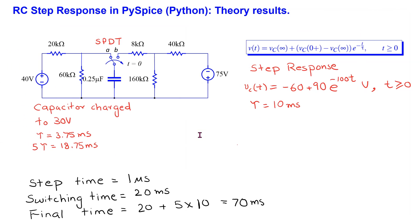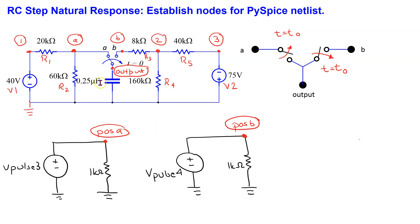Let us now move to the step response example. This solution is taken from another video in this channel. For this circuit, since charging requires 18.75 milliseconds, we can set the switching to take place at 20 milliseconds and set the final time as shown. Similar to before, we label the node voltages and the circuit components, and we use two single pole single throw switches to model the single pole double throw switch. These switches are controlled using the pulse voltage sources.